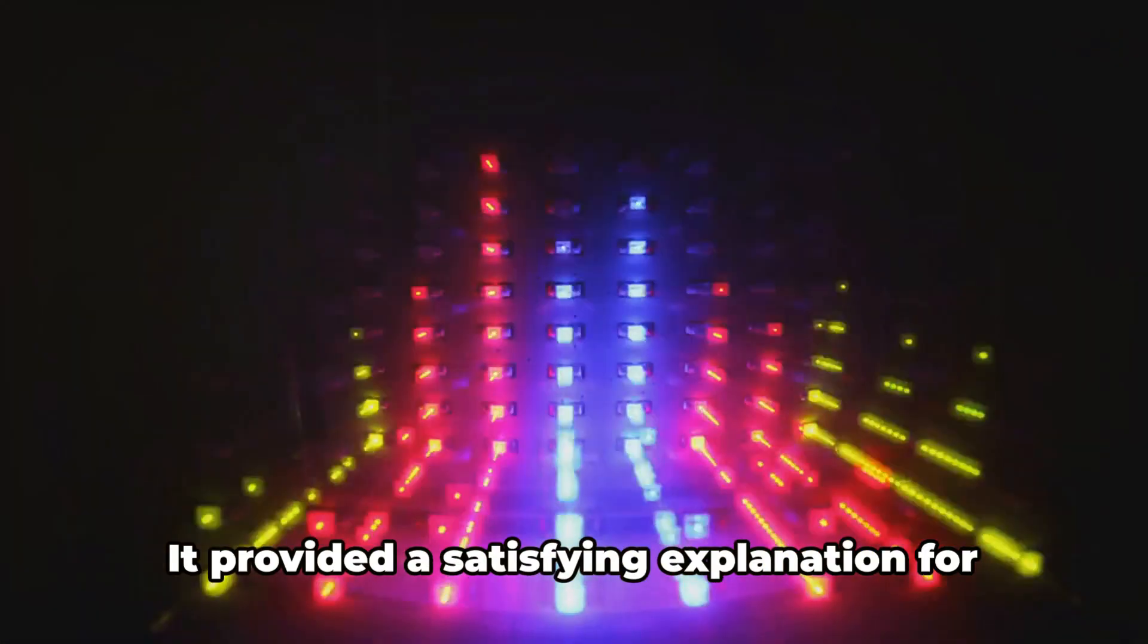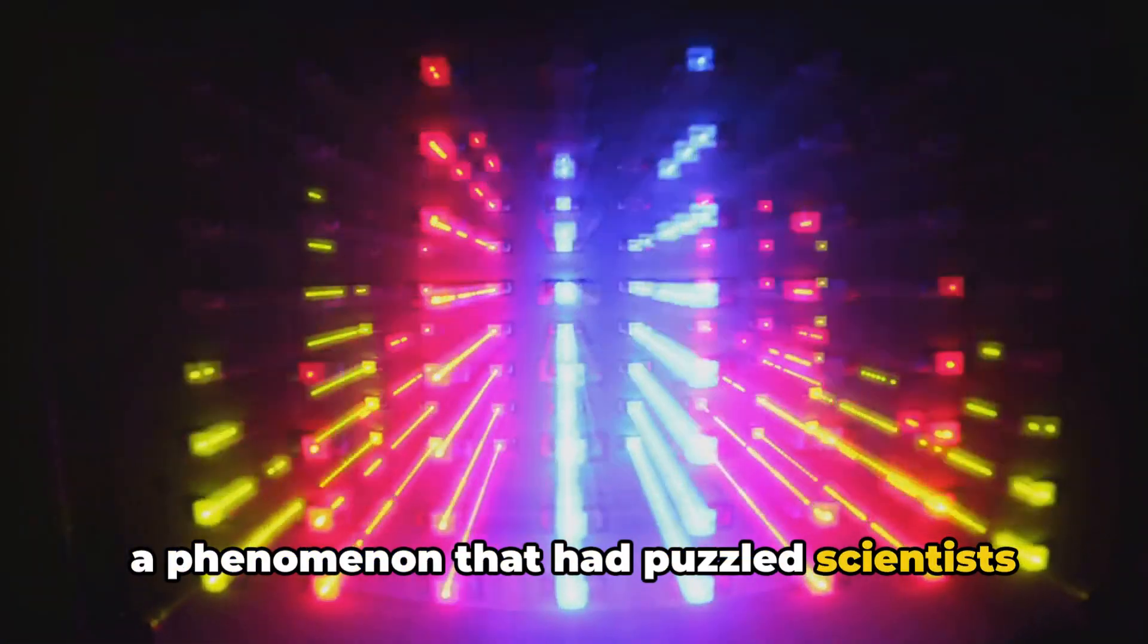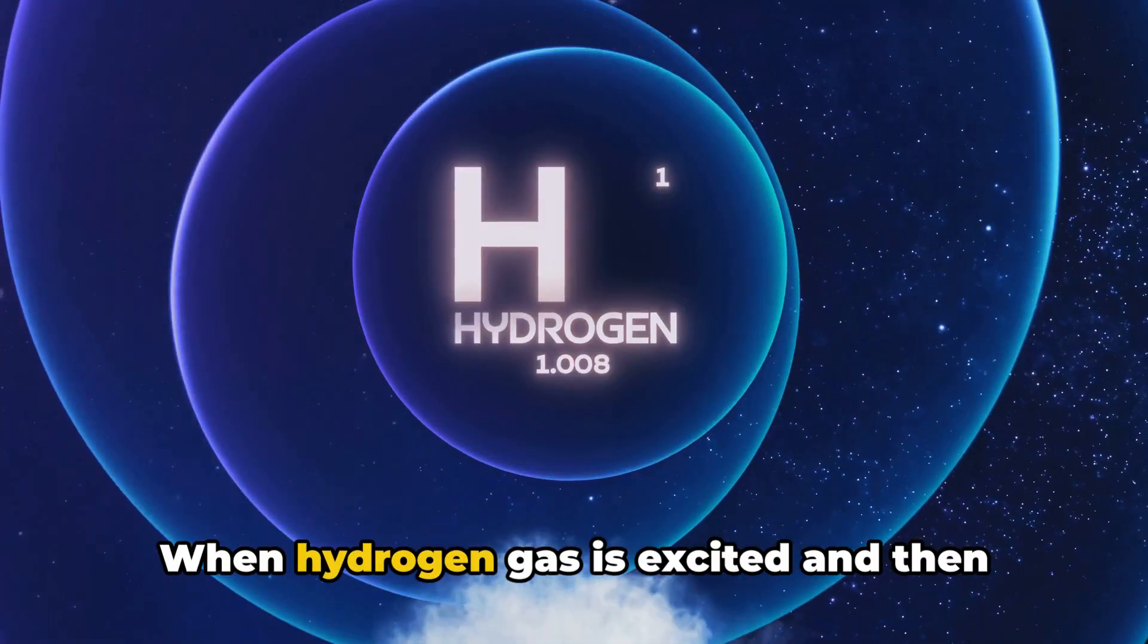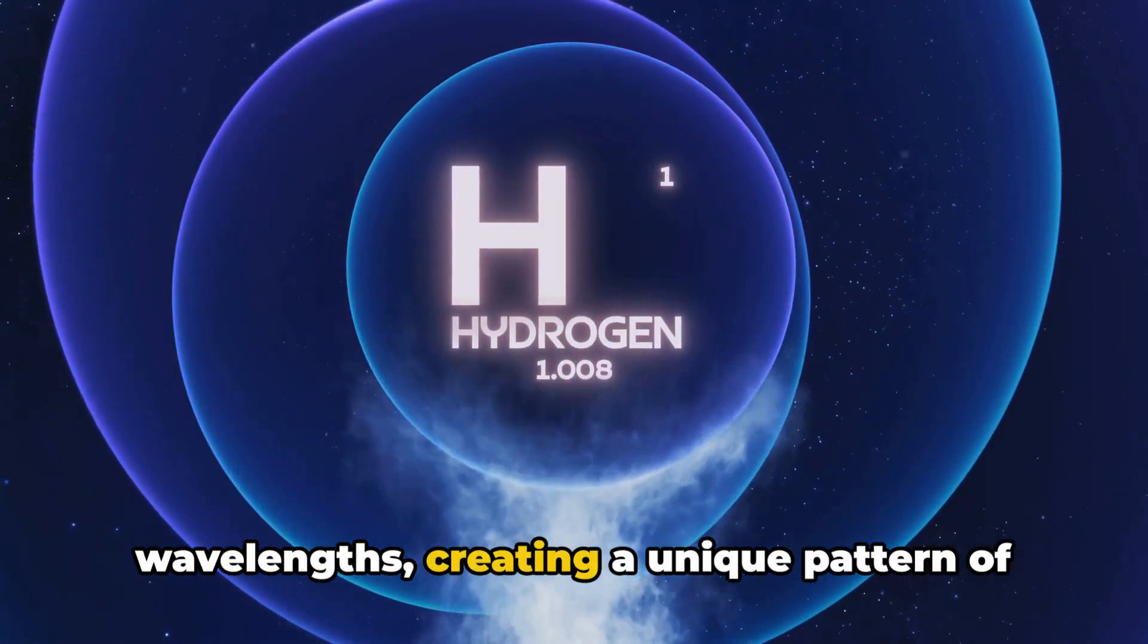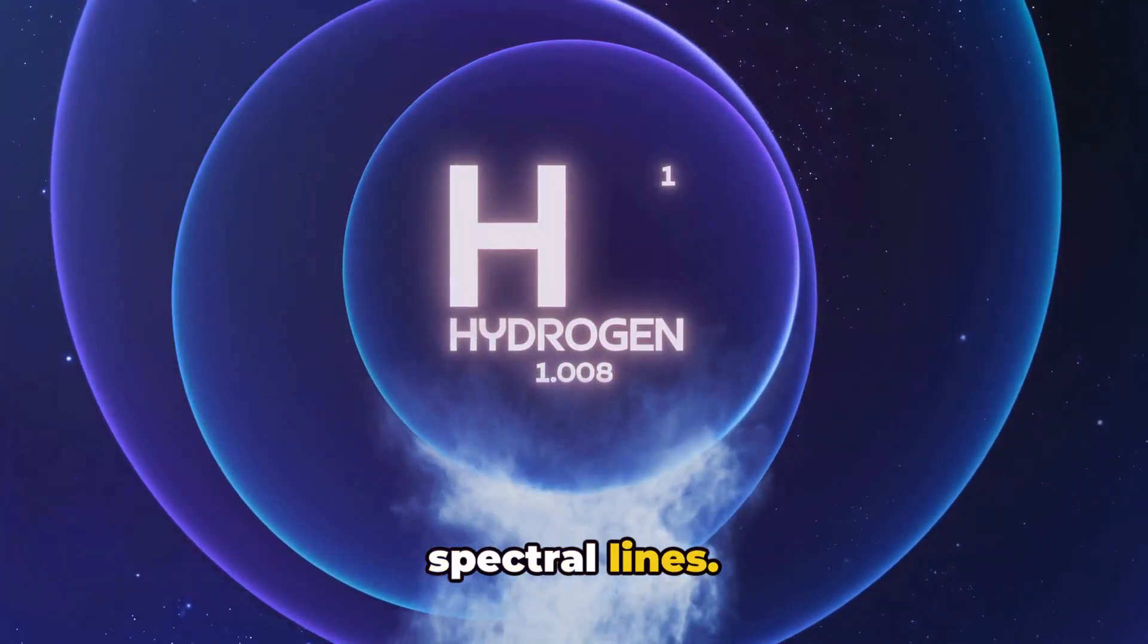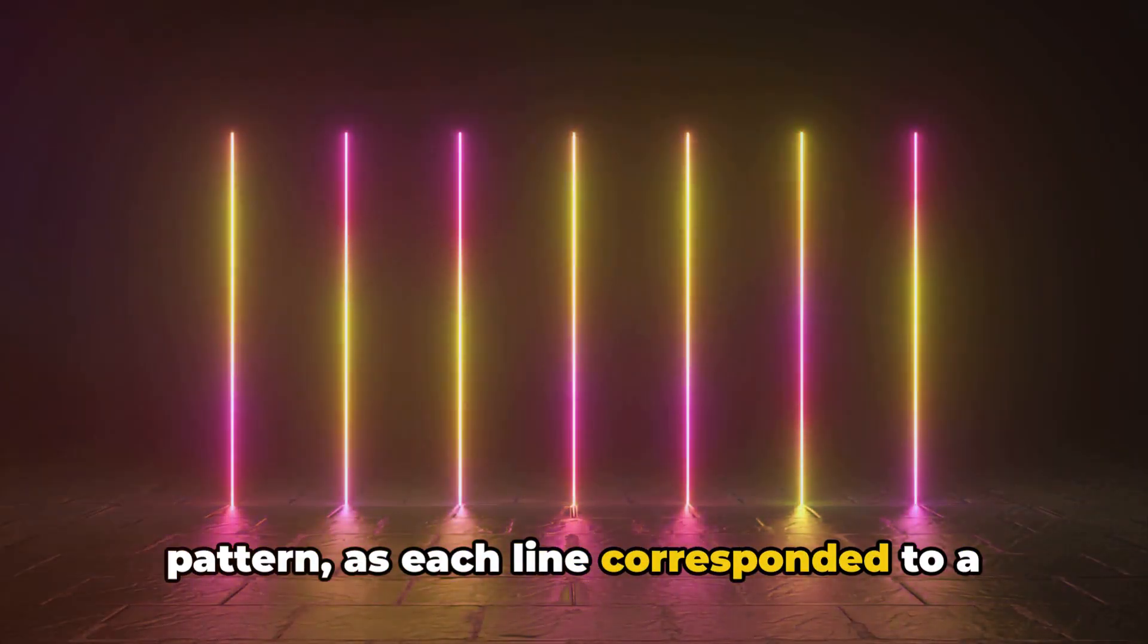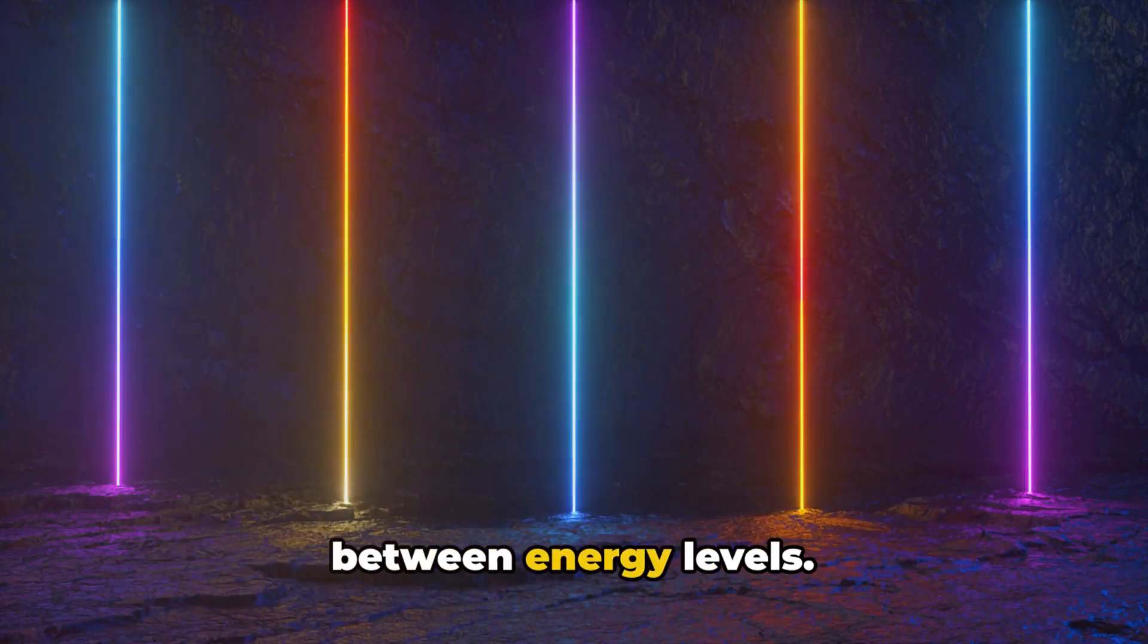This was a game-changing idea. It provided a satisfying explanation for a phenomenon that had puzzled scientists for years: the emission spectra of hydrogen. When hydrogen gas is excited and then relaxed, it emits light at specific wavelengths, creating a unique pattern of spectral lines. Bohr's model neatly accounted for this pattern, as each line corresponded to a photon emitted by an electron jumping between energy levels.